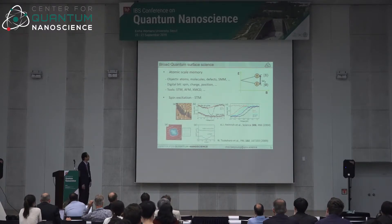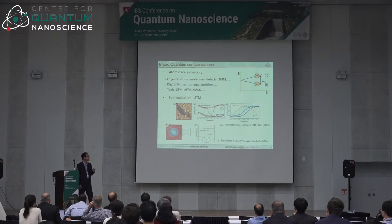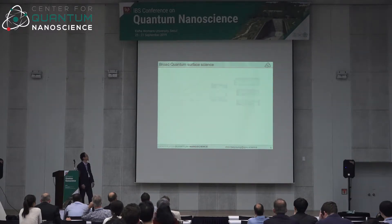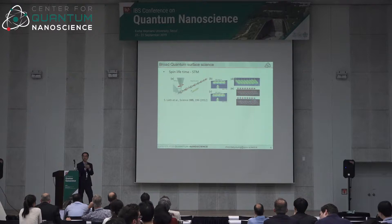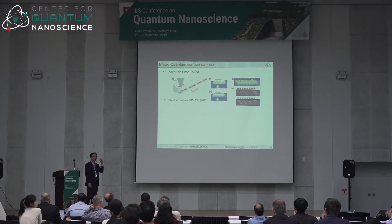Five years later, Maki Gawai's group deposited iron phthalocyanine molecules on copper oxide — also a thin insulator — and observed very interesting spin features using spin ITS. So you can measure spin excitation with atomic resolution of single molecules and atoms. The next question is: how long can the excited state stay? That is T1.